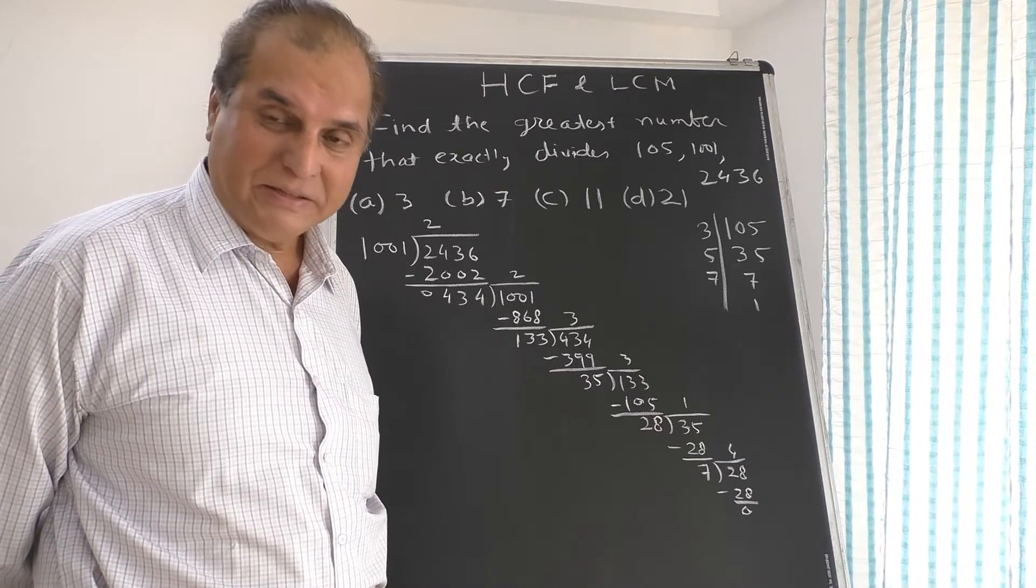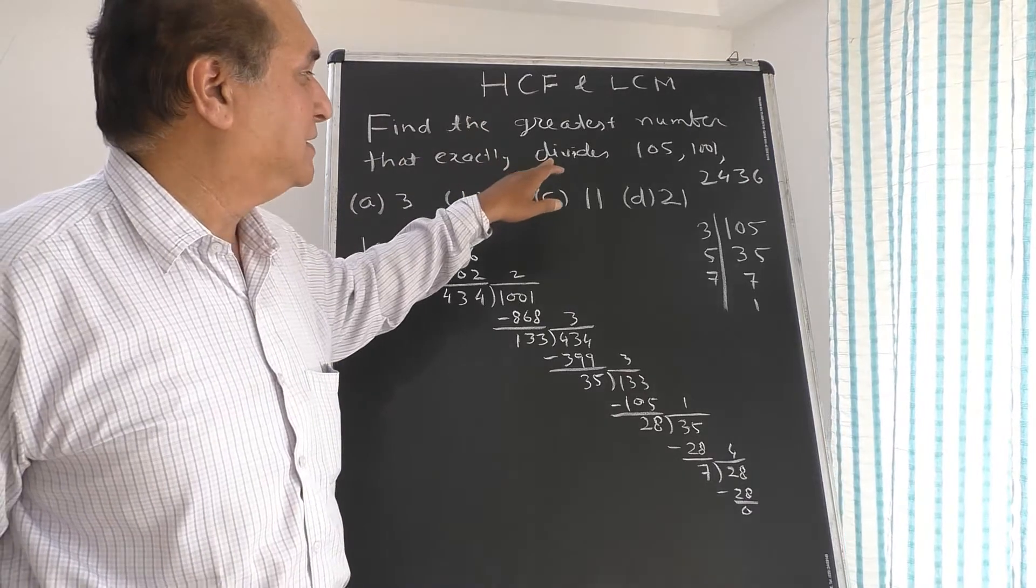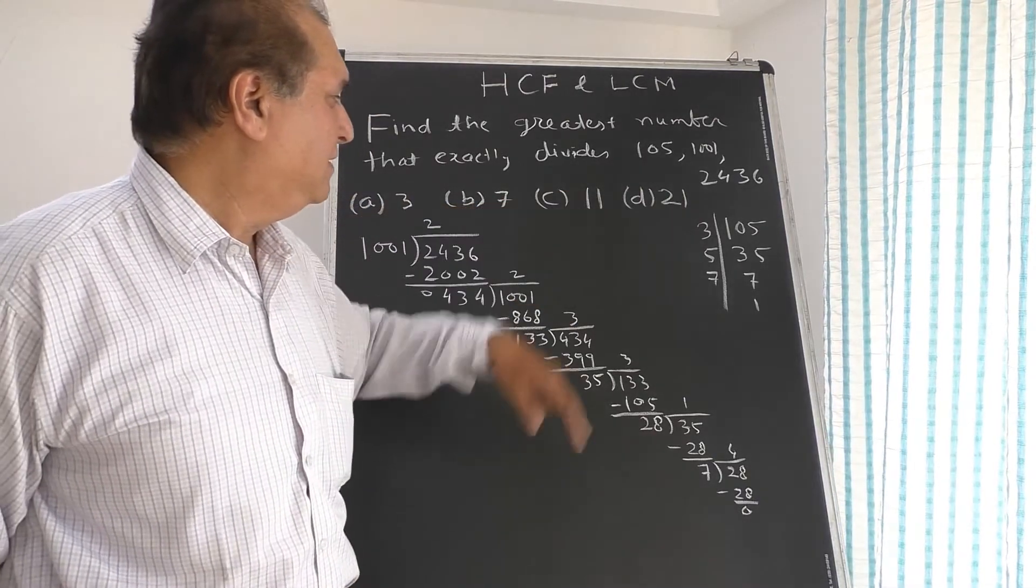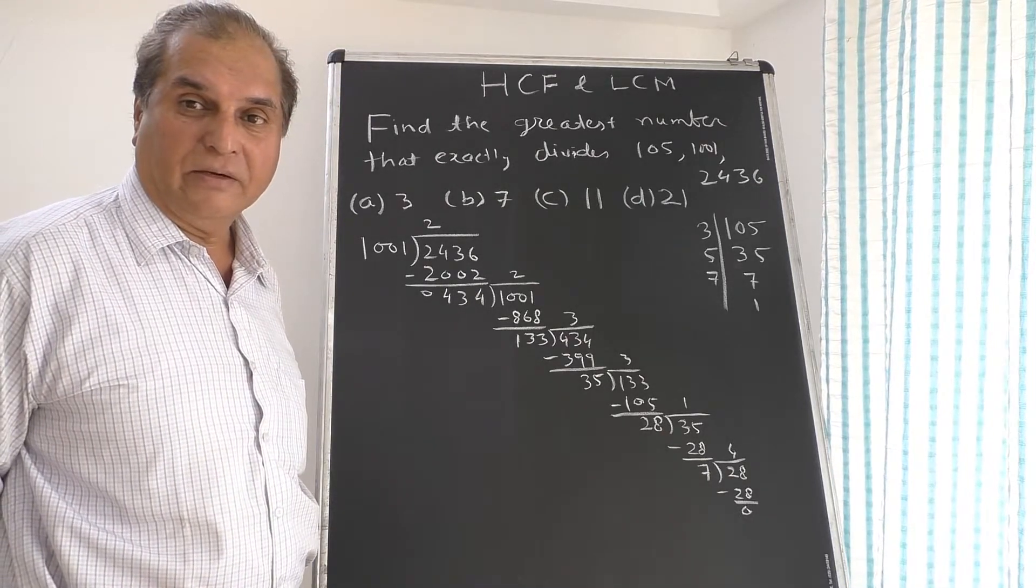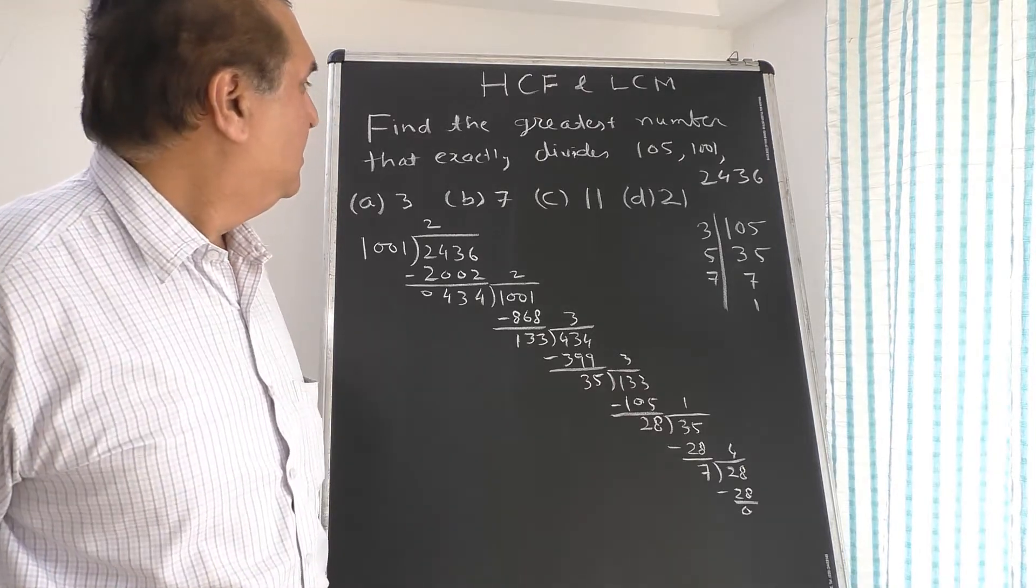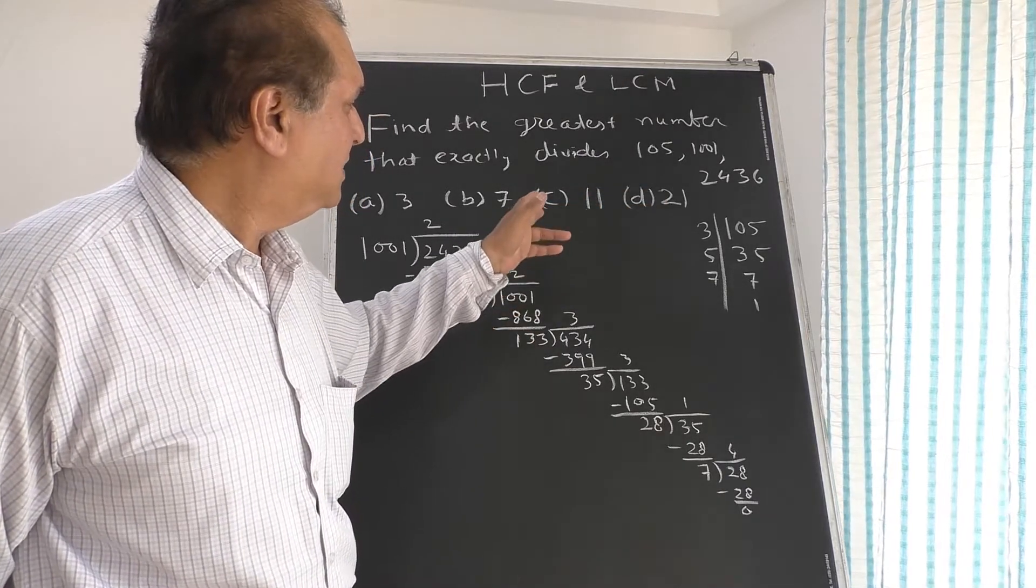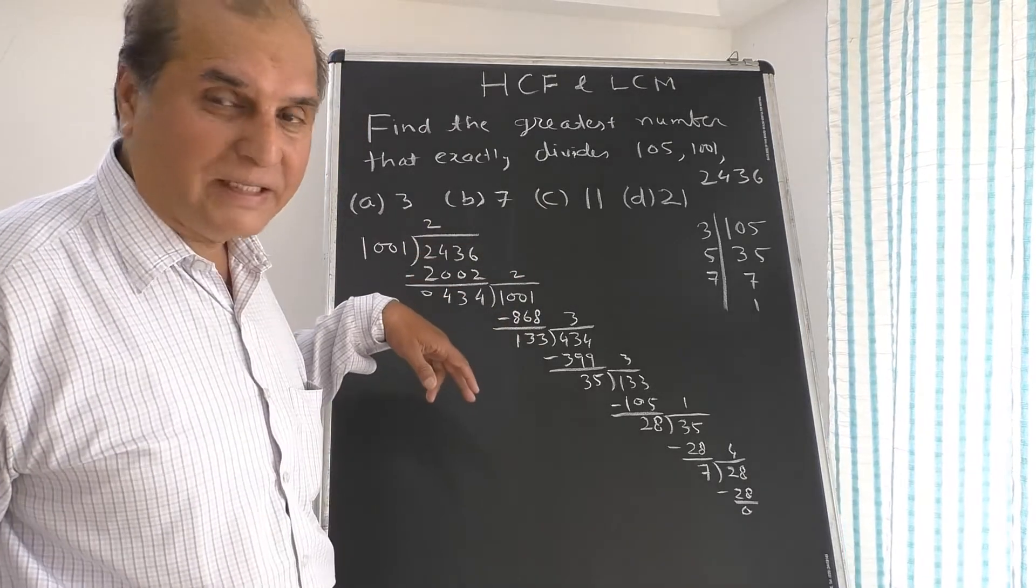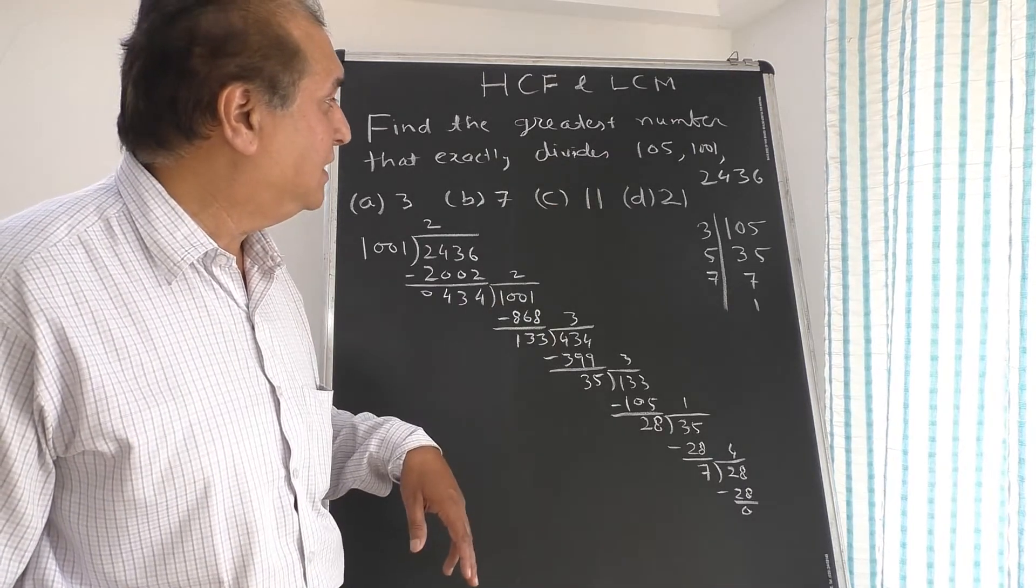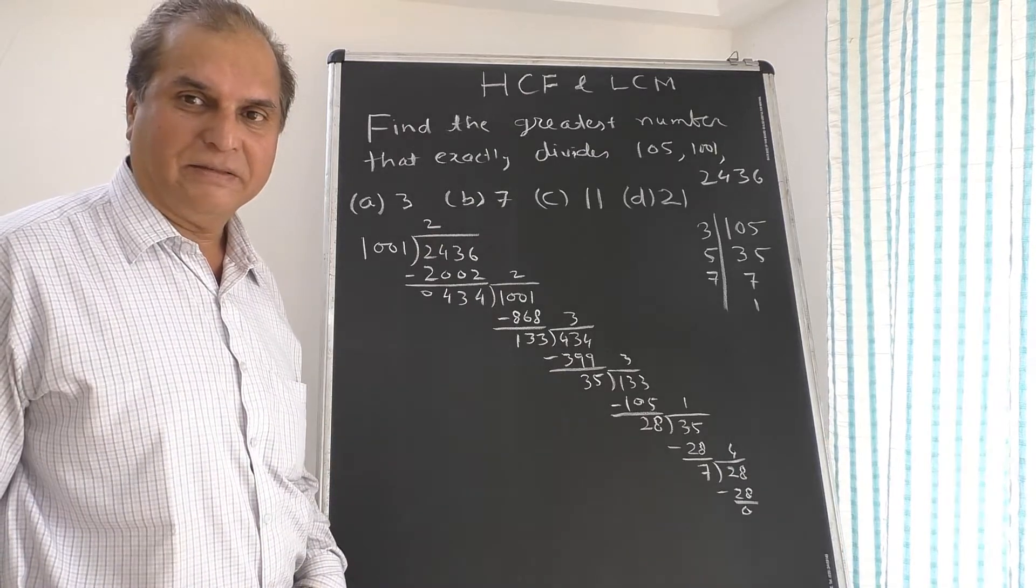First see: find the greatest number that exactly divides the numbers 105, 1001, 2436. You have options: (a) 3, (b) 7, (c) 11, (d) 21. So you have to decide which is the right option. Simply 11 is clearly cancelled because 105 is not divisible by 11, so one number is directly cut. 3 is also cut because 1001, the test of divisibility of 3, is going wrong. 1001 is not divisible by 3. So 3 is also cut, 11 also cut. We'll think of 7 and 21.